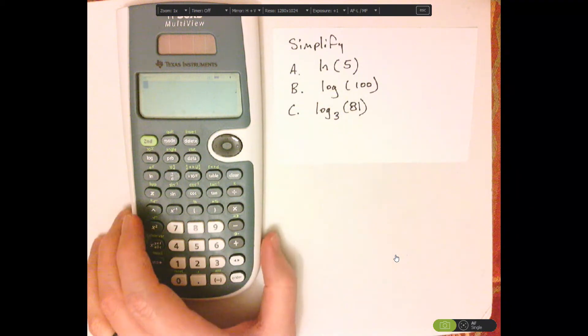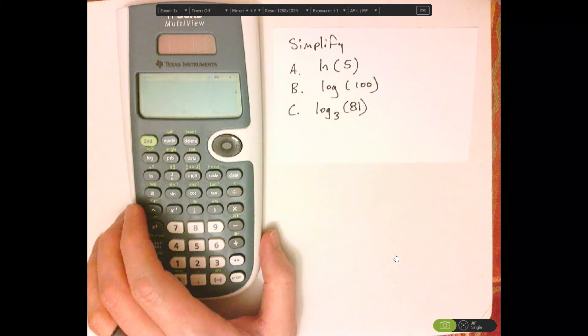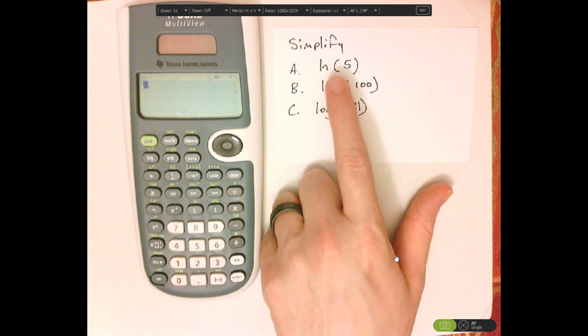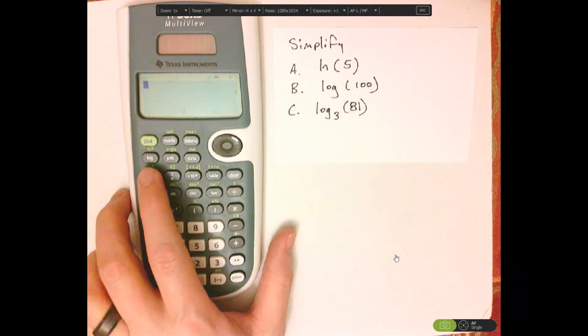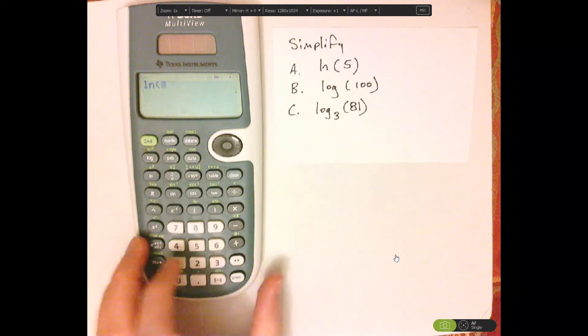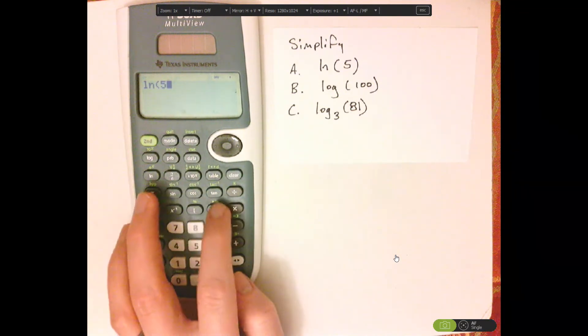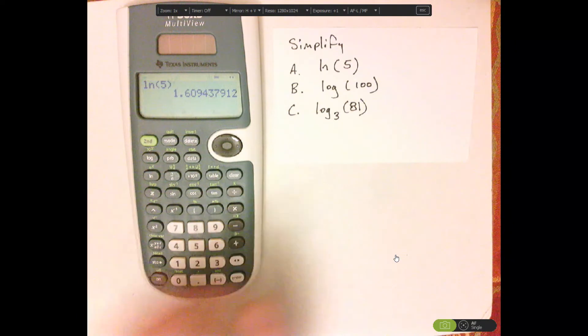Alright, so pretty much this is very straightforward. You have natural log, so you got the parentheses, 5, enter, there it is.